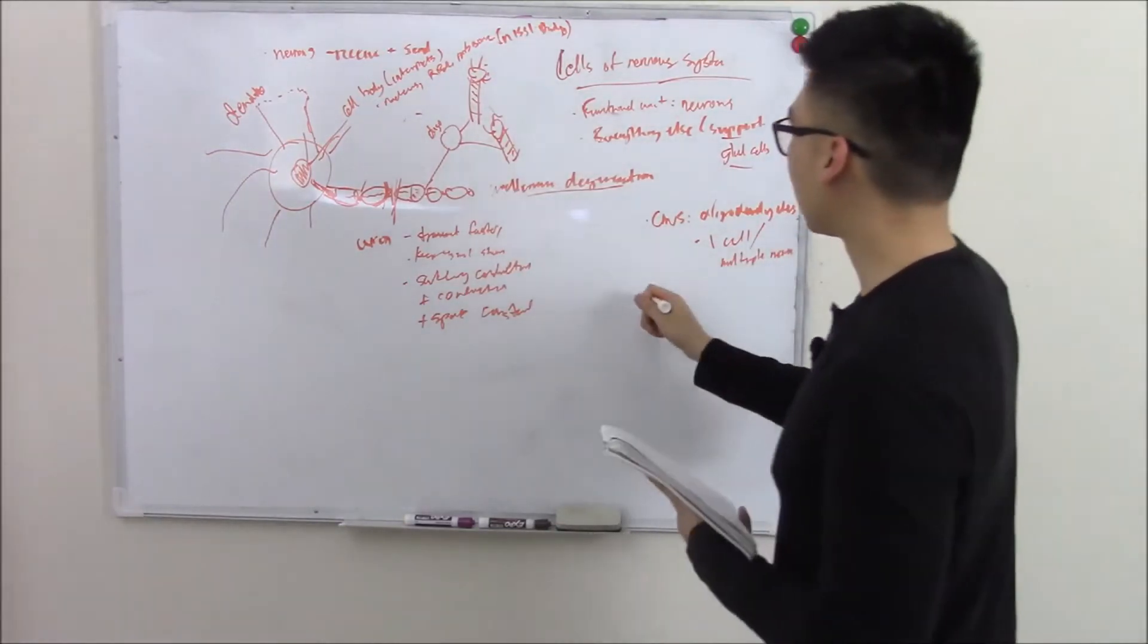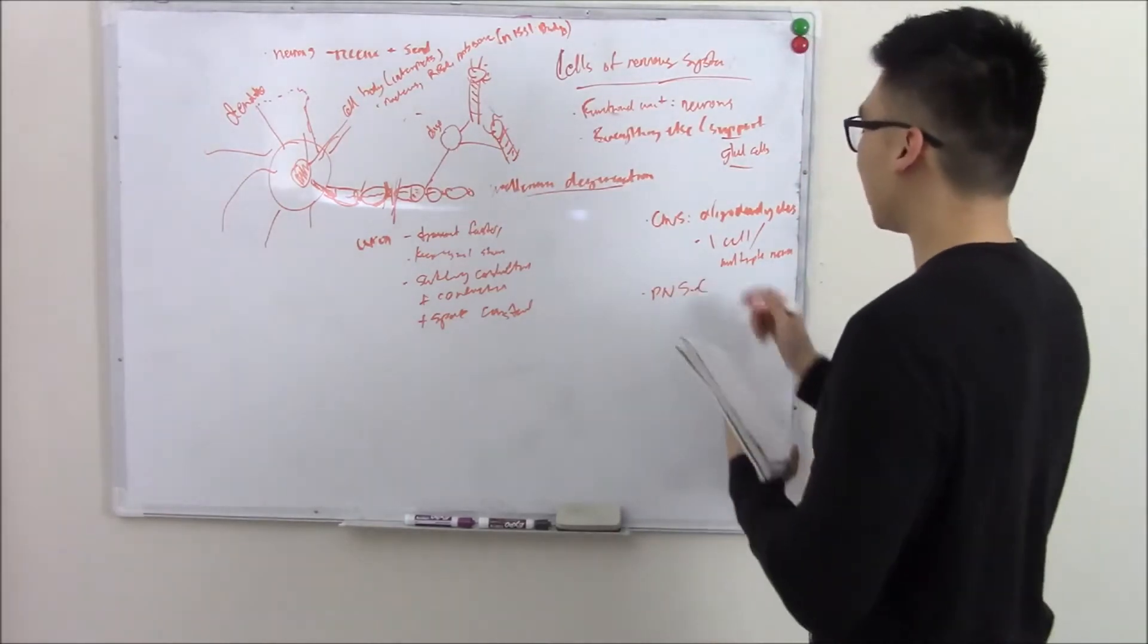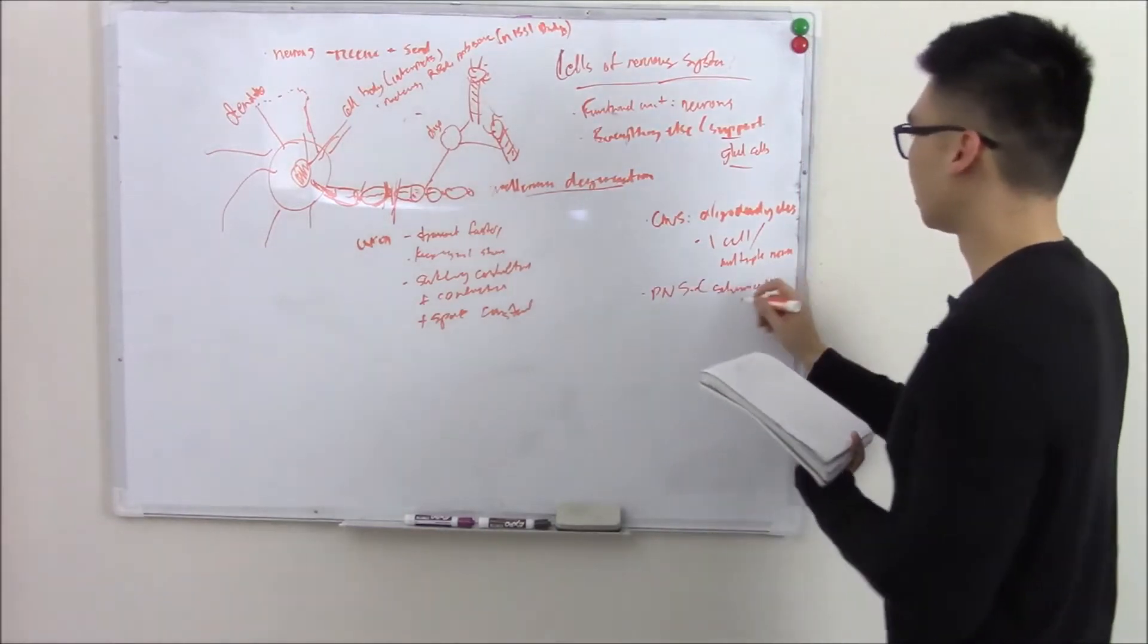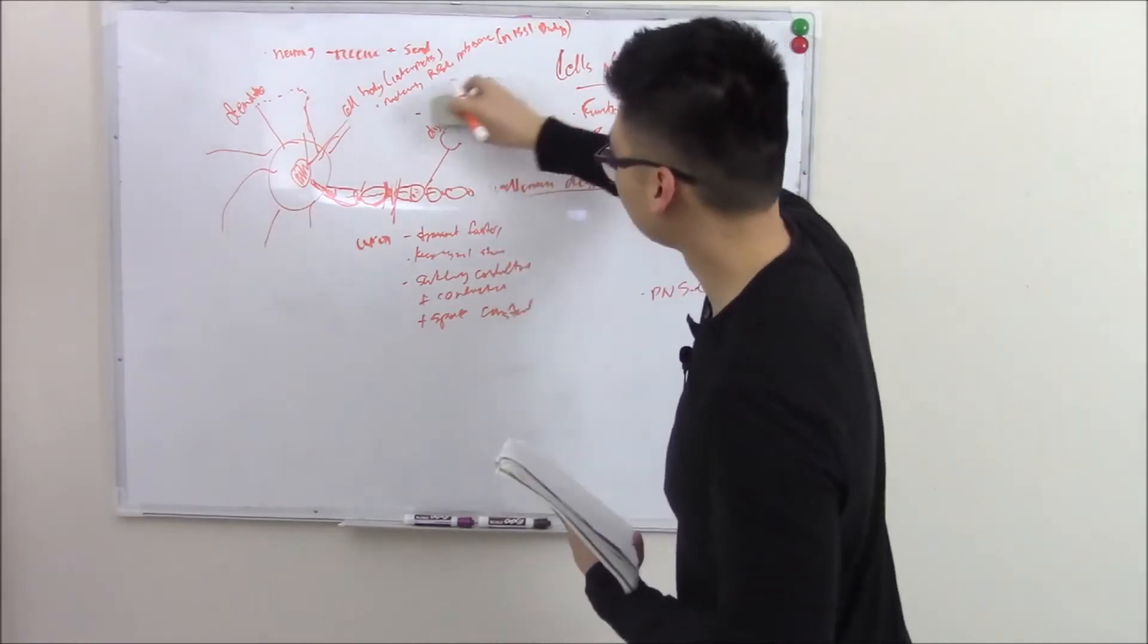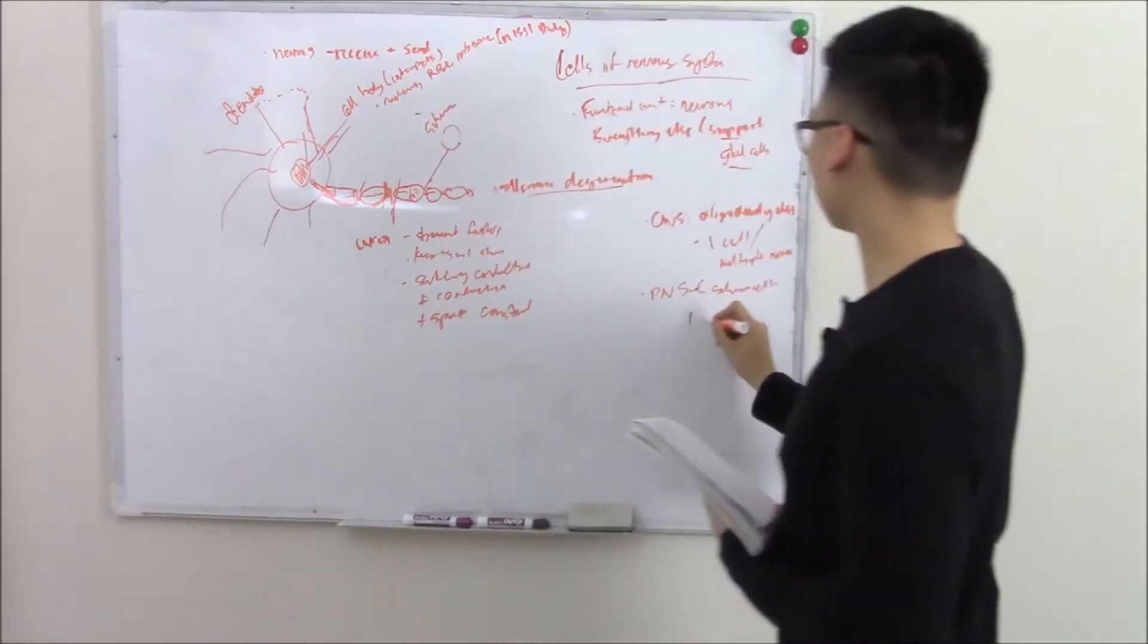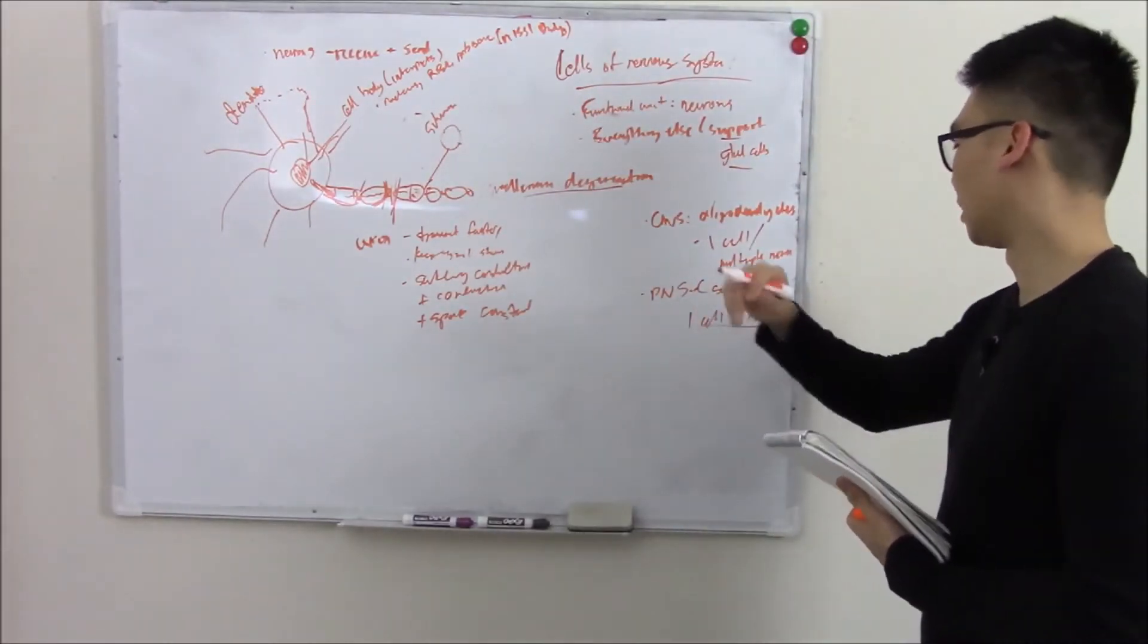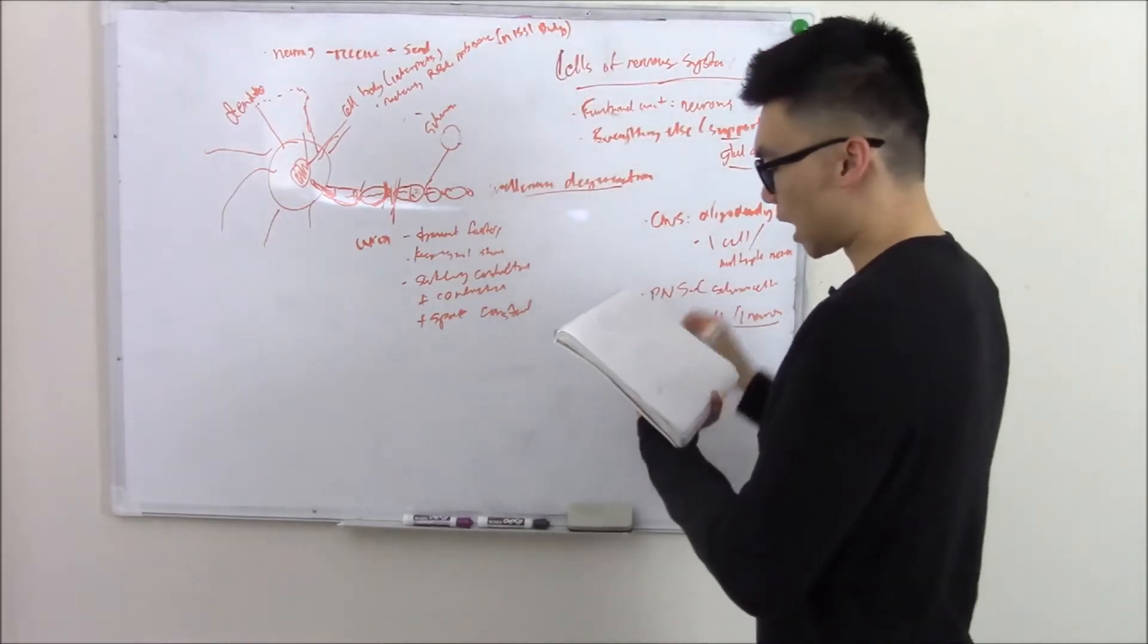Now in your PNS, it's a little bit less of a multitasker. These are going to be your Schwann cells. And these can only work one at a time - one cell to one neuron. Very important you know that. So your Schwann cells aren't very good at multitasking.